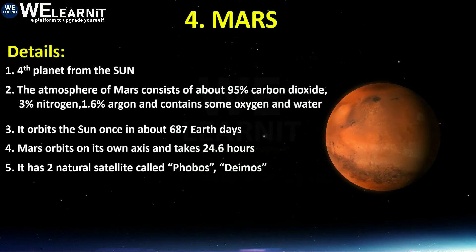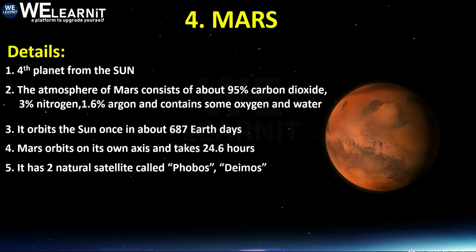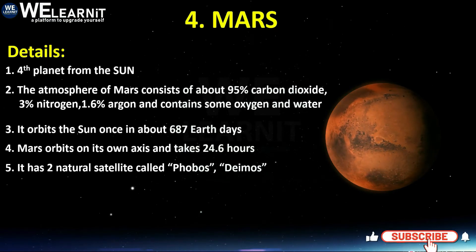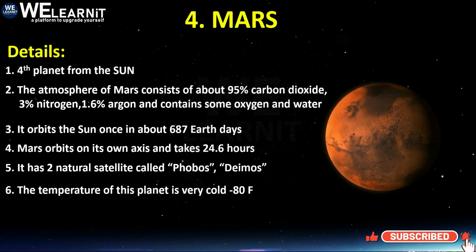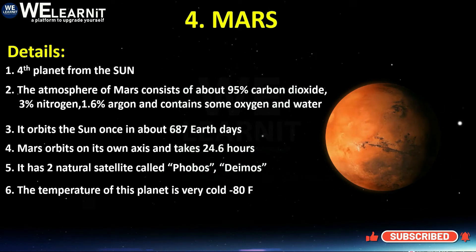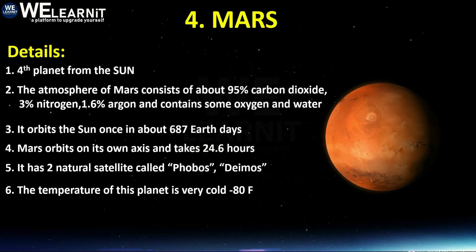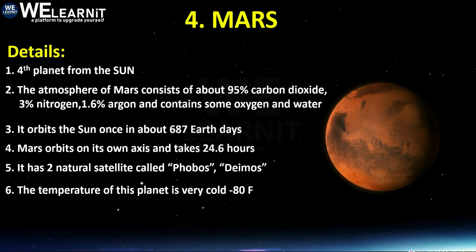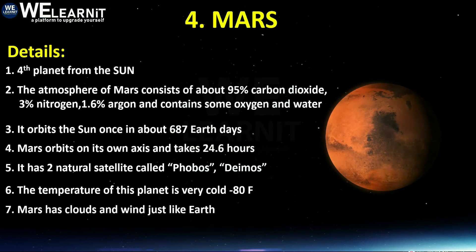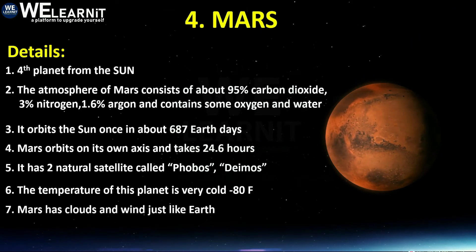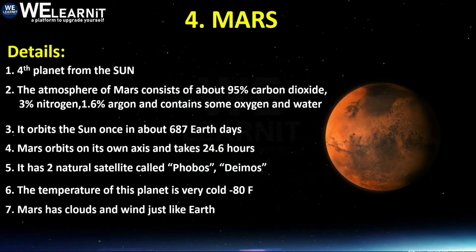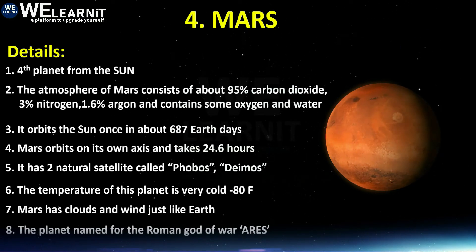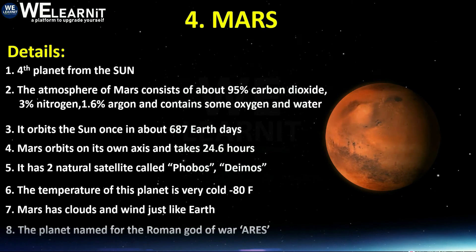Mars has two natural satellites — two moons — called Phobos and Deimos. The temperature of this planet is very cold, around minus 80 degrees Fahrenheit. Mars has clouds and wind just like Earth. This planet is named for the Roman god of war, known as Ares.